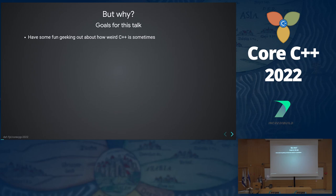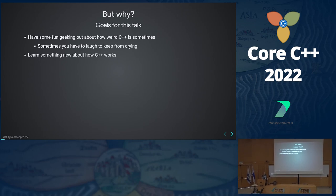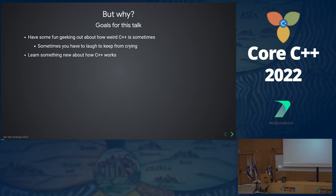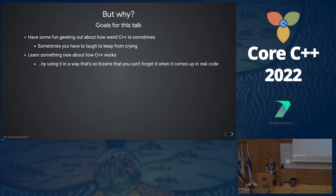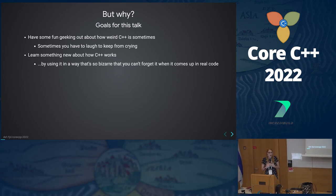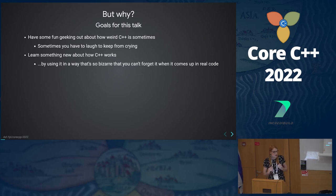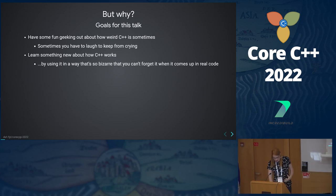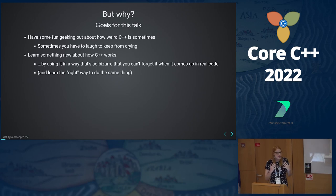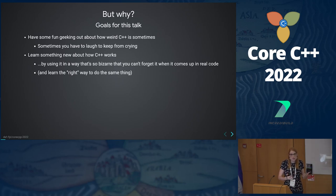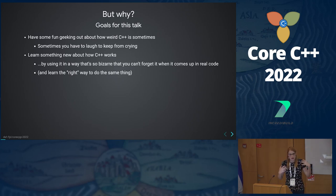We're just going to geek out about C++. Sometimes you have to laugh to keep from crying because C++ is that way sometimes. But the main goal really is to learn something new about how C++ works. We're going to do that by using it in a way that's so bizarre that it'll stick in your mind. But these aren't really the ways you should do these things — these are just ways of remembering some core important principle that you should use in a real software engineering context and not in these kind of joke Twitter 25-liner posts.